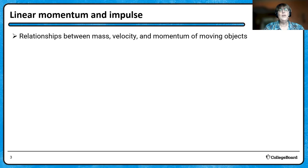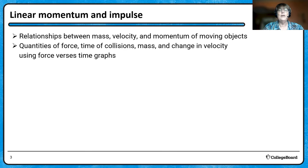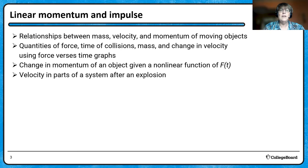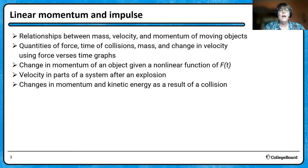We're going to look at relationships between mass, velocity, and momentum of moving objects, and consider quantities of force, the time over which collisions happen, and the way velocity changes using force versus time graphs. That'll lead to a change in momentum, and we'll look at nonlinear functions because this is AP Physics C. We'll also look at velocity in parts of systems after explosions, and consider kinetic energy changes.